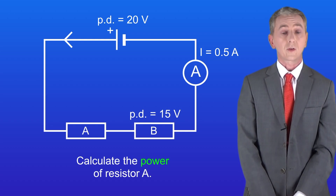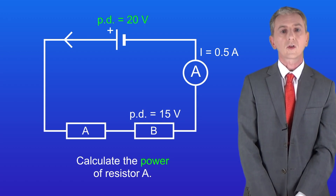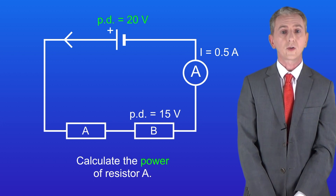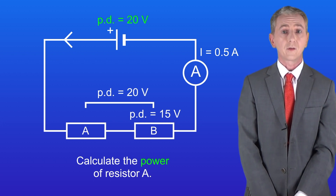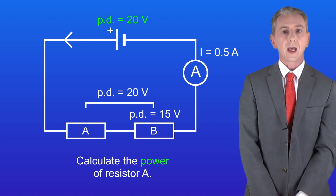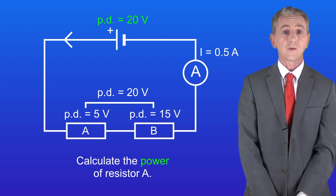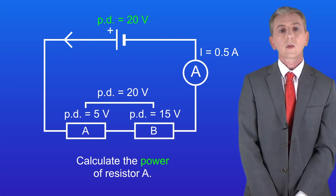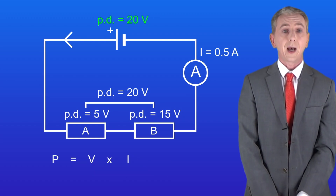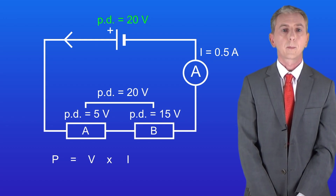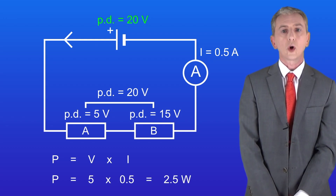The total potential difference across the cell is 20 volts, which means the total potential difference across both resistors is also 20 volts. Resistor B has a potential difference of 15 volts, so resistor A must have a potential difference of 5 volts. The current passing through the circuit is 0.5 amperes. Multiplying 5 by 0.5 gives us a power of 2.5 watts, and that's the final answer.